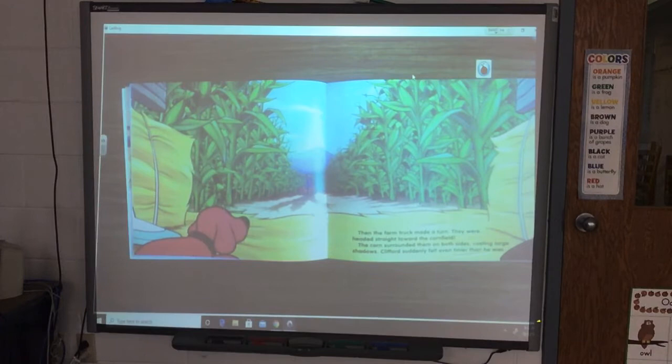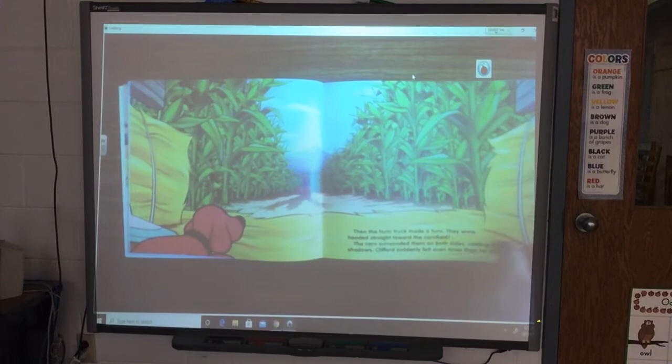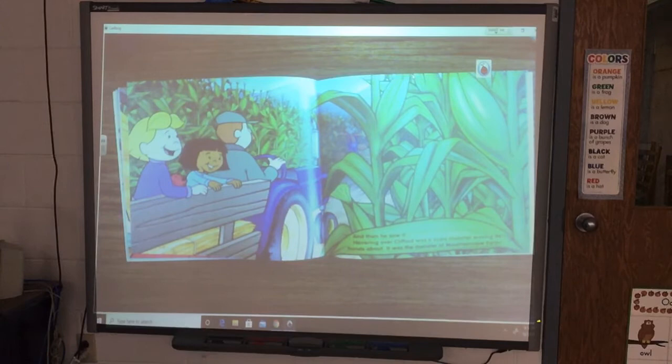Then the farm truck made a turn. They were headed straight toward the cornfield. The corn surrounded them on both sides, casting large shadows. Clifford suddenly felt even tinier than he was. And then he saw it. Hovering over Clifford was a scary monster waving its hands about. It was the monster of Mountain View Farm.